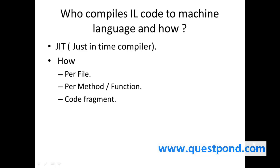One more question which can follow is: How does JIT compile? Does it compile line by line, per file, or per method? JIT compiles code in three ways: per file, per method or function, and code fragment. All of these three ways is dependent on JIT. We cannot control it from outside. Per file means it takes the complete C# file and compiles it. Per method means it takes a method or function and compiles only that. Code fragment means it can take three or four lines of code and compile that into machine language.